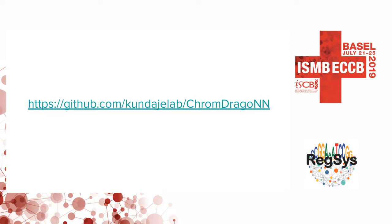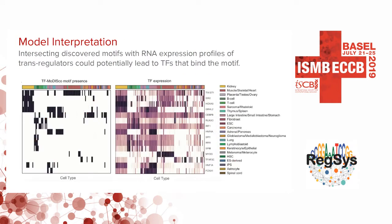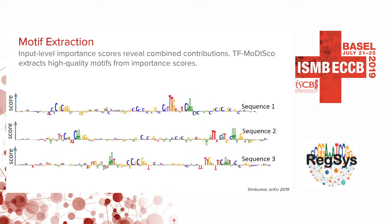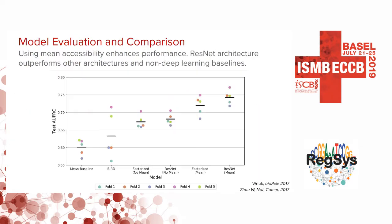We're roughly on time so there's time for a couple of questions. The presenter is asked about the impressive performance gain from adding the mean, and whether adding the variance has been tried — since variance would also give a range for expected values. The speaker responds that this hasn't been tried yet but would be interesting to explore.